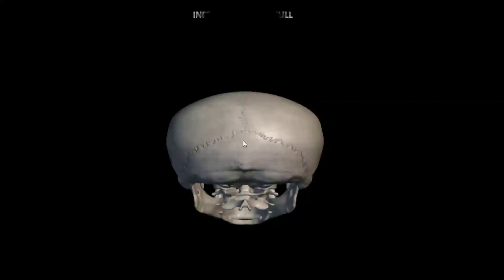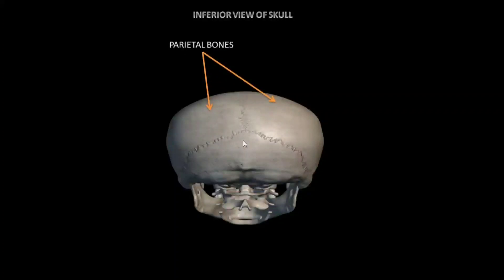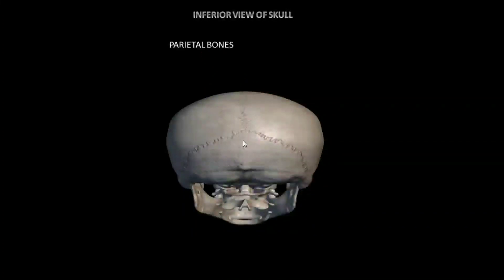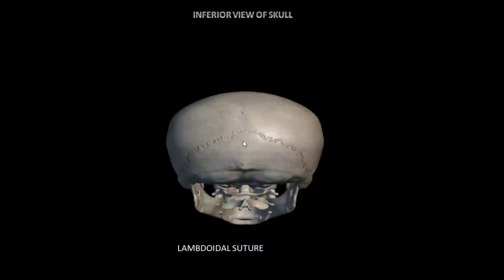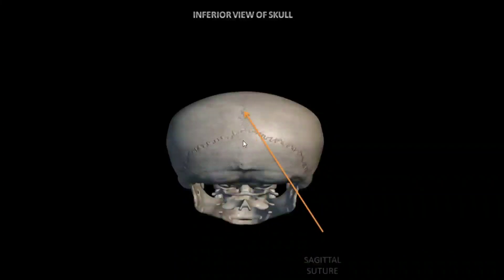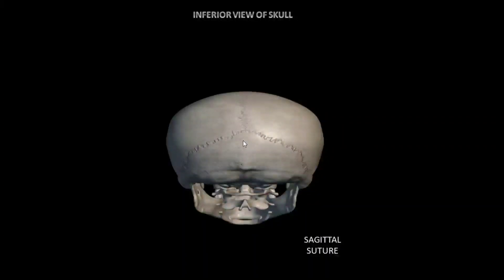The next view is the inferior view of skull. In this view, the parietal bones — which are the roof of the skull as discussed in previous views — join with different cranium bones. The lambdoidal suture articulates with the parietal bone and occipital bone. The next is the sagittal suture — parietal bone frontal bone se sagittal suture se articulate hote hai (parietal bones articulate with the frontal bone via the sagittal suture).